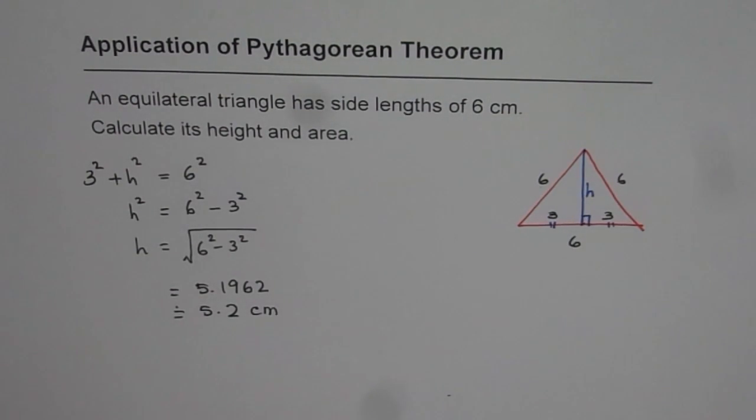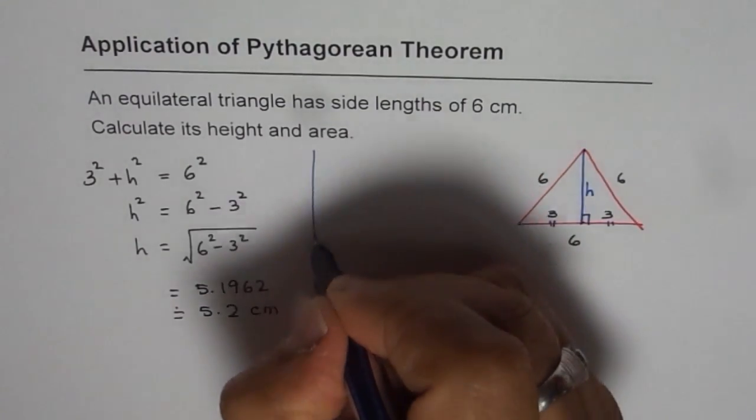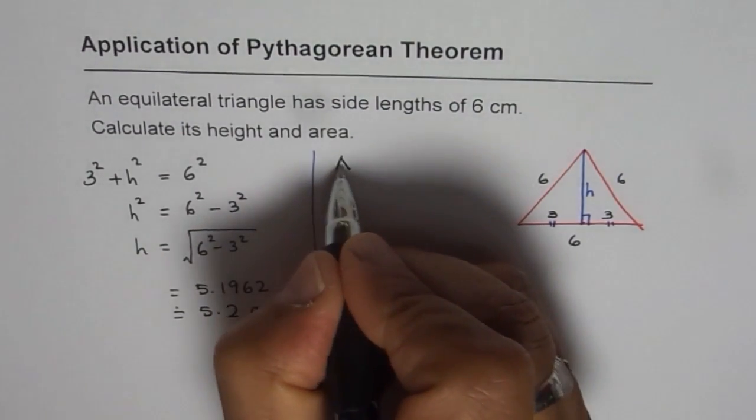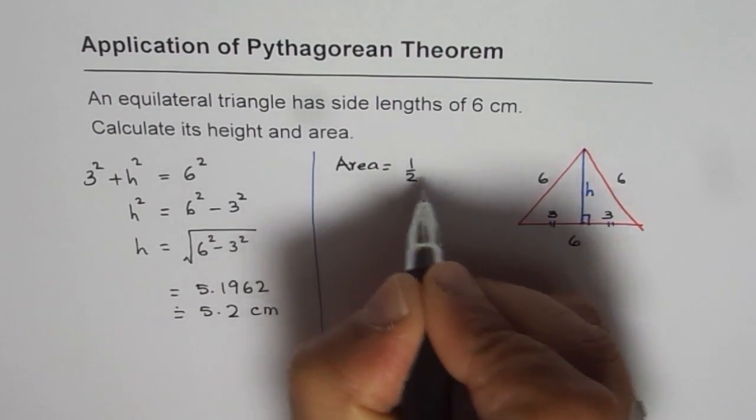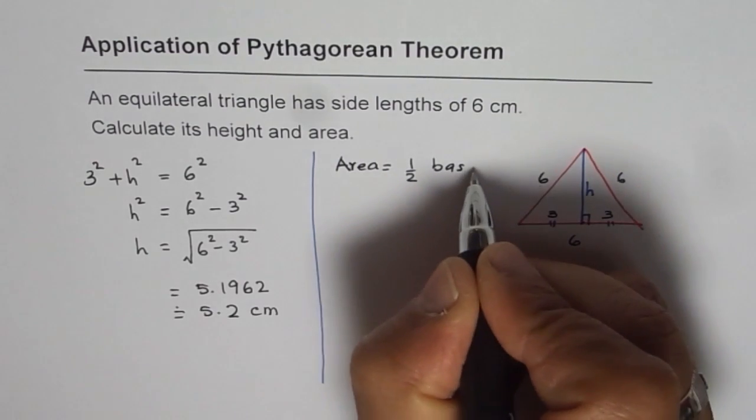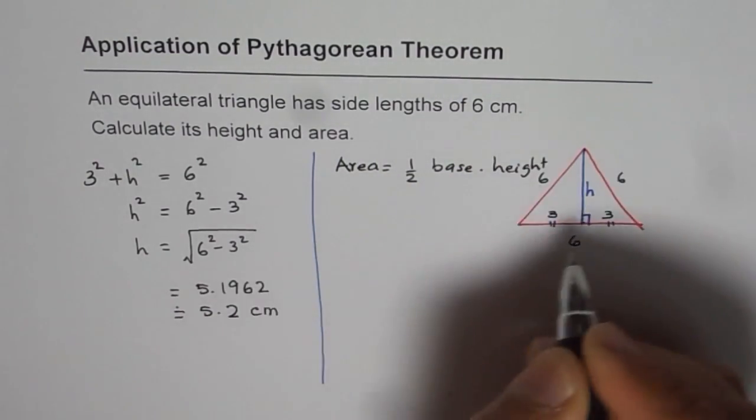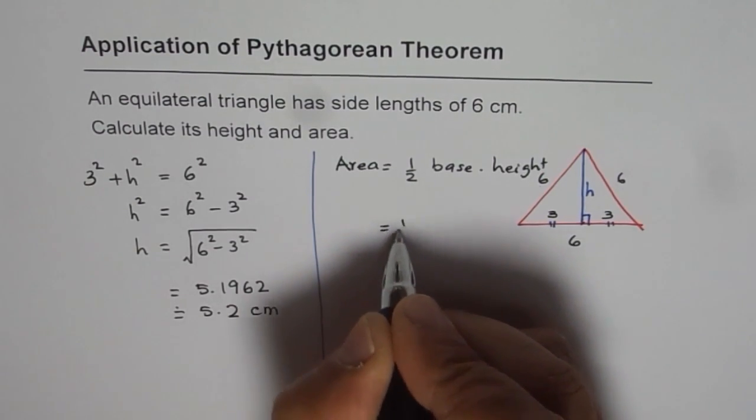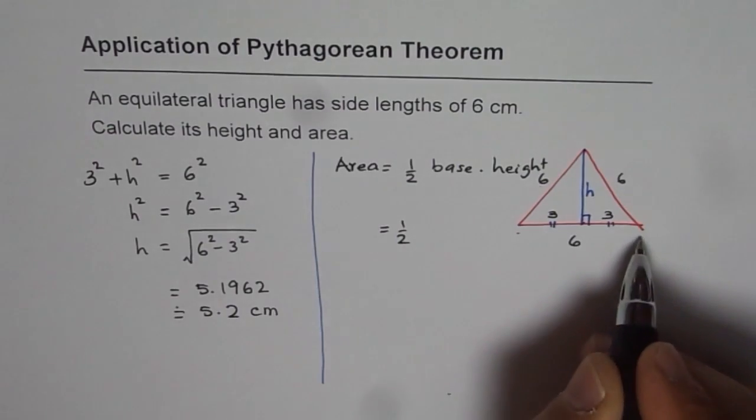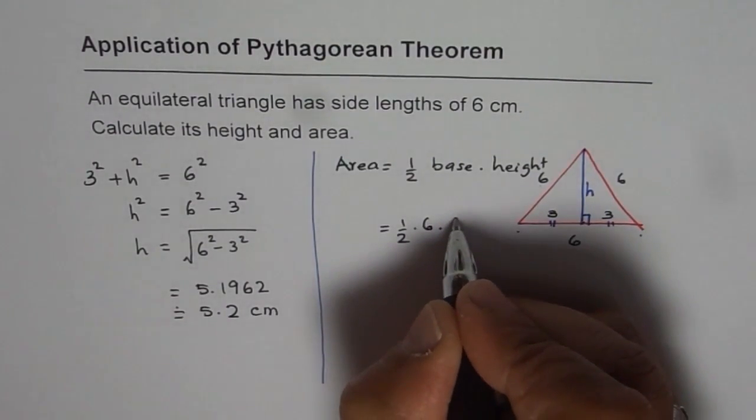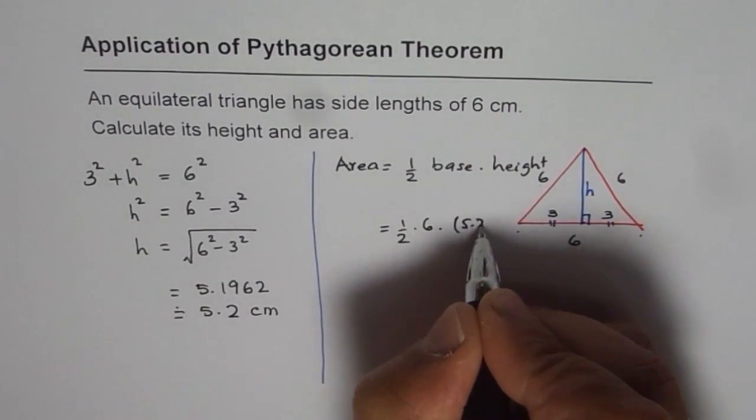Now, the next part is to find area. Now, what is the area of a triangle? Area of the triangle is half base times height. Now, in this particular case, we found that the base is 6 and height is 5.2 approximately. So we will write 5.2.